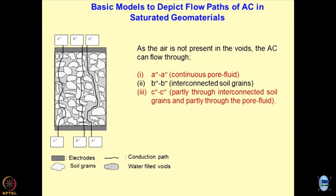The third possibility is when we have saturated soils. One possibility is continuous pore solution — the easiest way for current to pass through with very little resistance. B'' is interconnected soil grains, provided the soil grains have good conductivity like fine grain materials. The third path is a sandwich of the two — interconnected soil grains and partly through the pore fluid. These type of micro mechanisms have to be studied and developed in the near future.